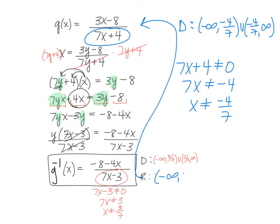So negative infinity to negative 4 sevenths, union negative 4 sevenths to infinity will be the domain and the range there for the inverse function.